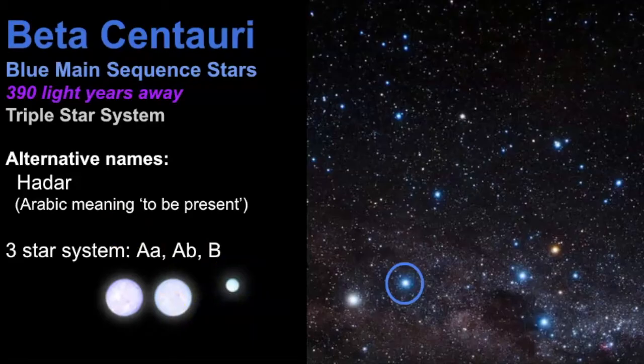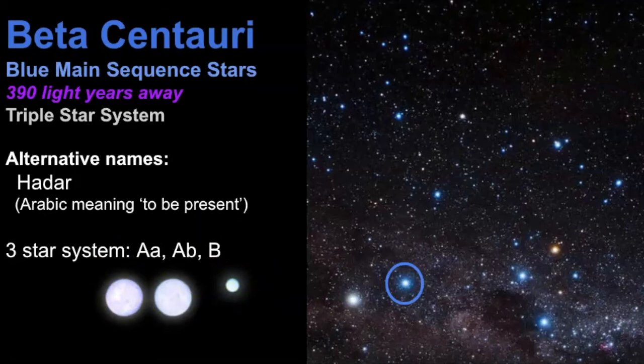The Beta Centauri stars are much, much bigger than the Alpha Centauri system. Because they're larger, they're hotter, and because they're hotter they are blue in color. This system is much, much bigger than our own Sun. The reason it appears dimmer than Alpha Centauri in the sky is because it's much further away.